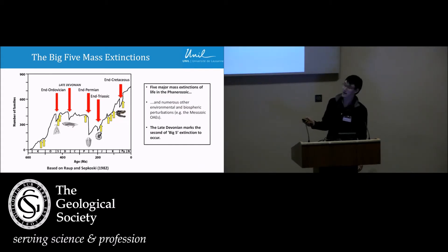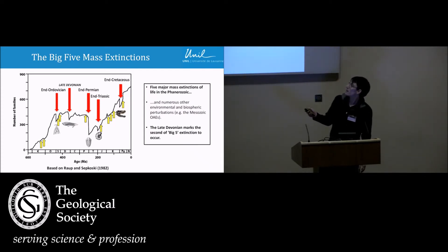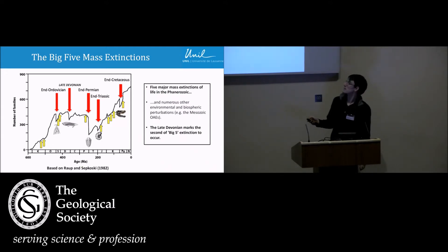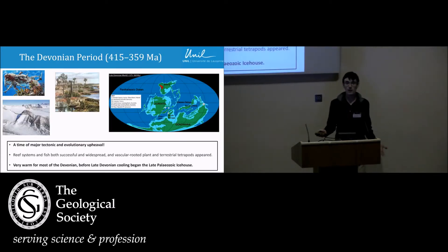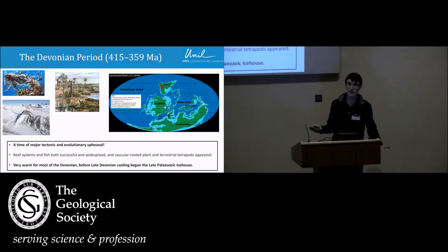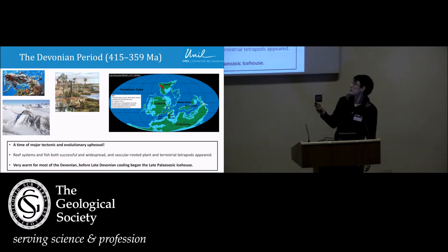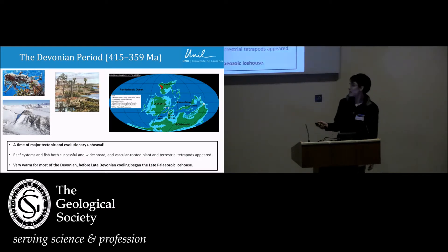We start with the end-Ordovician, probably caused by glaciations, and then the late Devonian marks the second of these big five extinctions before the three better-known ones from the Permian onwards. The Devonian is quite an interesting time in Earth's history — there's a lot of tectonics going on, with some major rifting happening and Eovariscan orogenies eventually heralding the beginning of the formation of Pangaea.